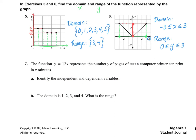Let's take a look at number seven. The function y equals 12x represents the number y of pages of text a computer printer can print in x minutes. So first it asks us to identify the independent and the dependent variables.